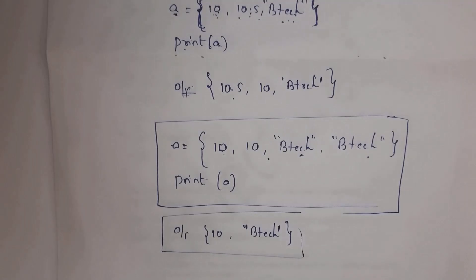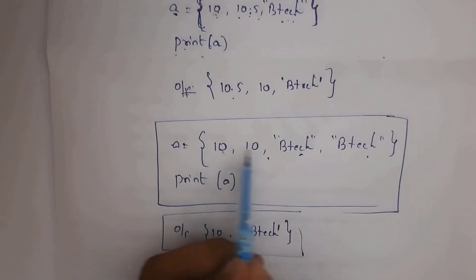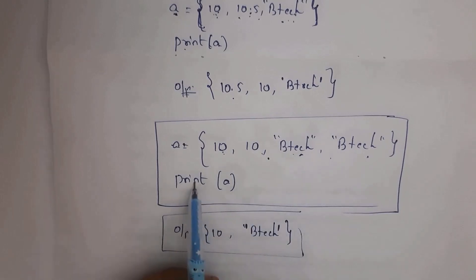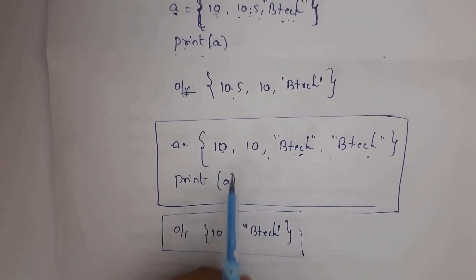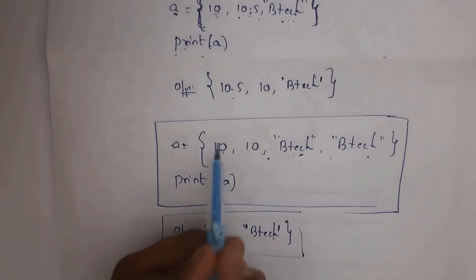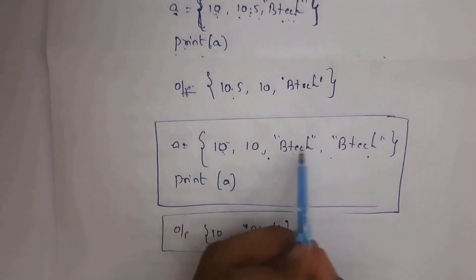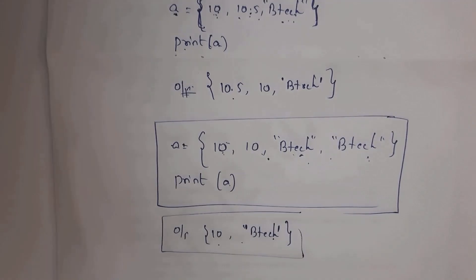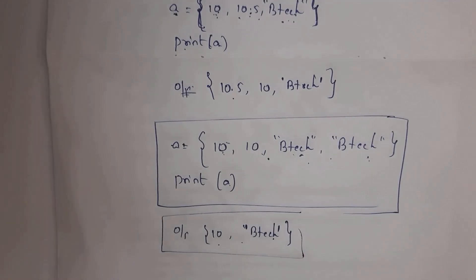Python sets do not allow duplicate values. In this example, I entered 10 twice and btec twice. Whenever you write print(a), you will get output 10, btec — it will display 10 and btec only once. That means Python sets do not allow duplicate values.